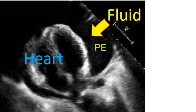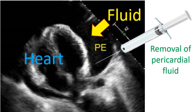Cardiac tamponade needs urgent removal of fluid from the pericardial cavity by needle aspiration or surgical drainage if the fluid is very thick. Very thick fluid can occur if the collection is due to some types of bacterial infection.